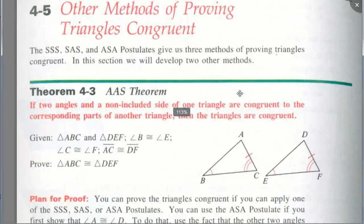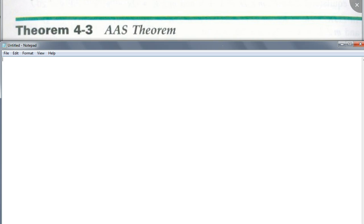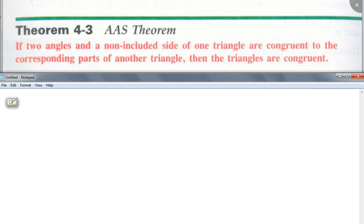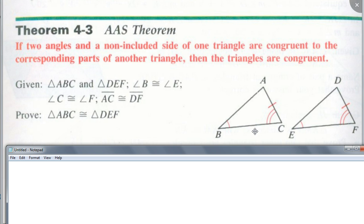Anybody want to guess what Angle-Angle-Side might say? Just by looking at the name, I bet you could guess what this theorem is saying. So how would this be different than Angle-Side-Angle? The side does not have to be the included side. Write this down: two angles and a non-included side. This is different from Angle-Side-Angle. It's not a postulate like the others — this is a theorem, so we can actually prove it.